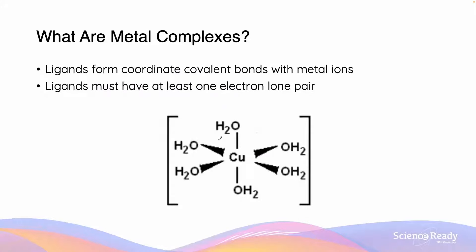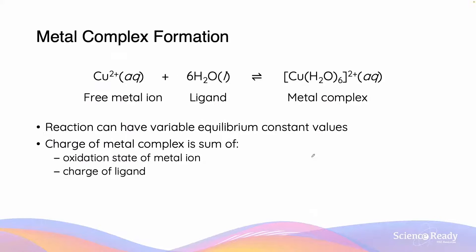In a metal complex, the metal forms coordinate covalent bonds with molecules that are called ligands. These ligands must have at least one electron lone pair in them in order to be able to form a coordinate covalent bond. When we are looking at metal complex formation reactions, they can have a variety of equilibrium values.